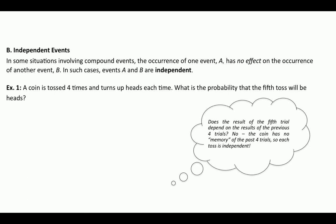To begin, we're going to look at probably the simplest case, which is independent events. The way we define it is: two events are said to be independent if the first event, A, has absolutely no effect on the second event, B. If A has no effect on B, we call these events independent.